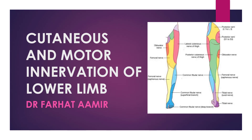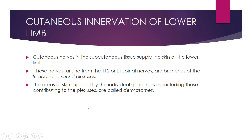Today we will cover a new topic which is cutaneous and motor innervation of the lower limb. Cutaneous means skin and motor is related with muscles. We will see the nerve supply of the skin and muscles of the lower limb. Cutaneous nerves are present in the superficial fascia or subcutaneous tissue and they supply the skin of the lower limb. These nerves arise from T12 or L1 spinal nerve.